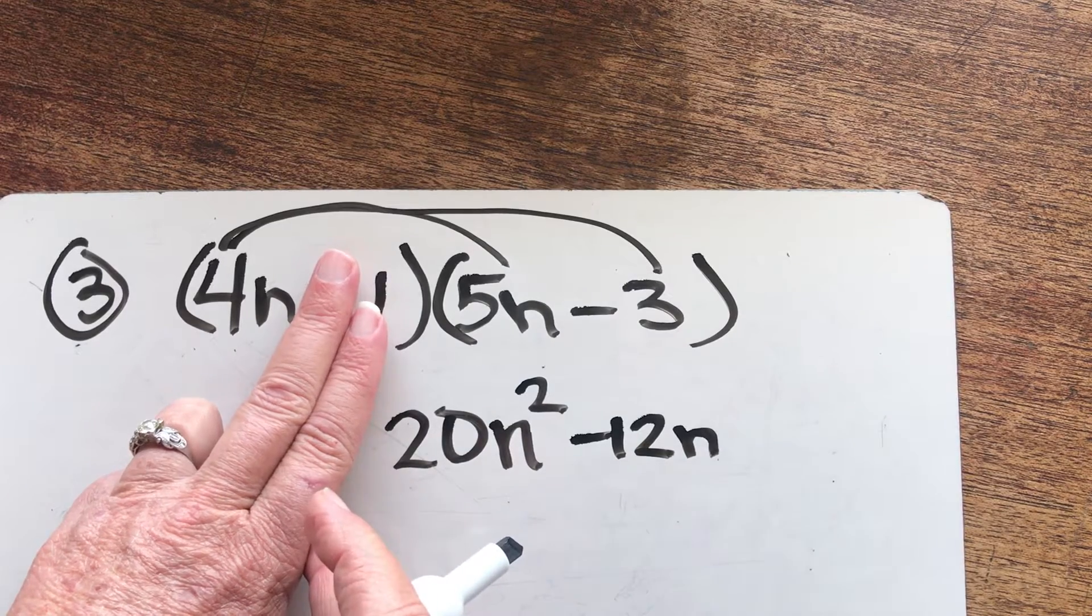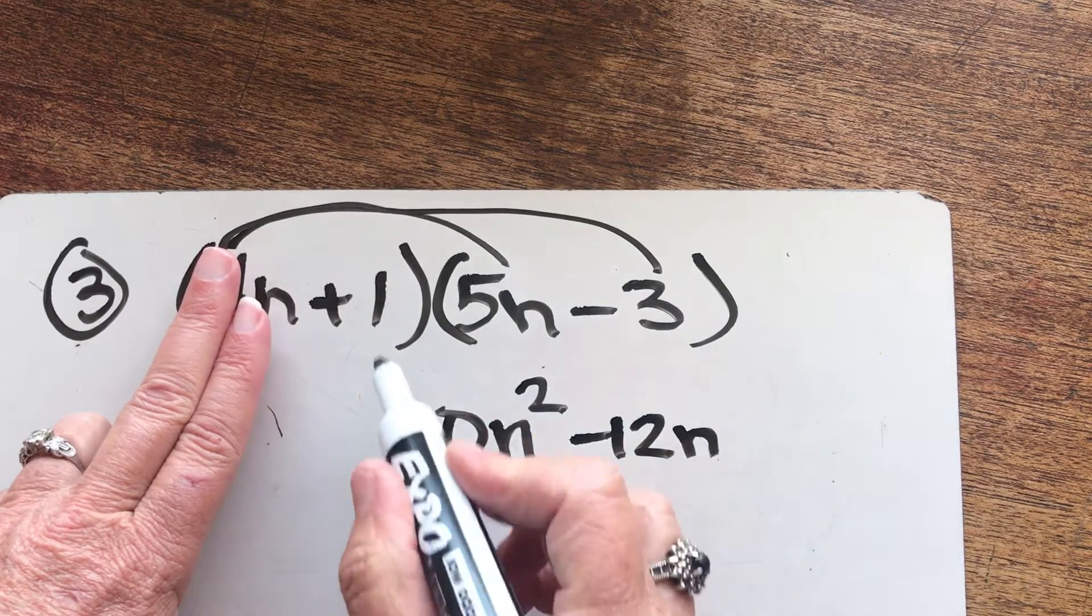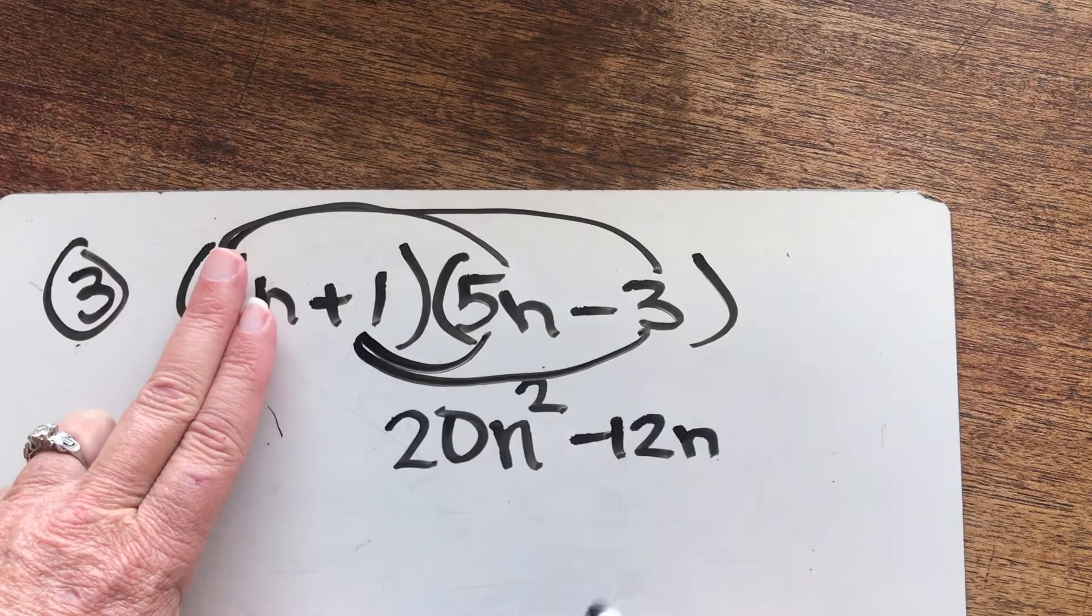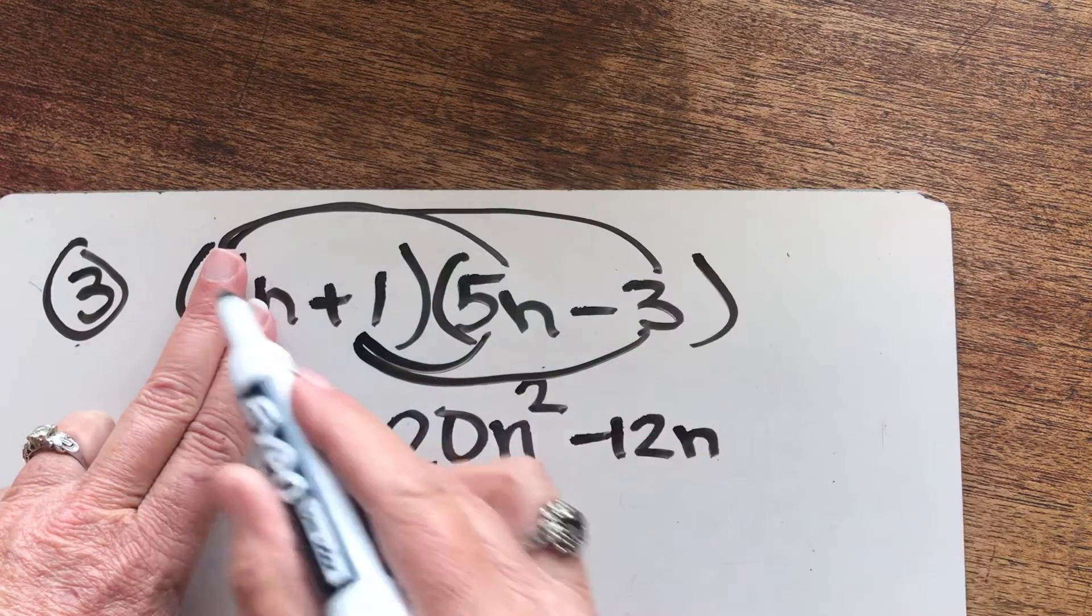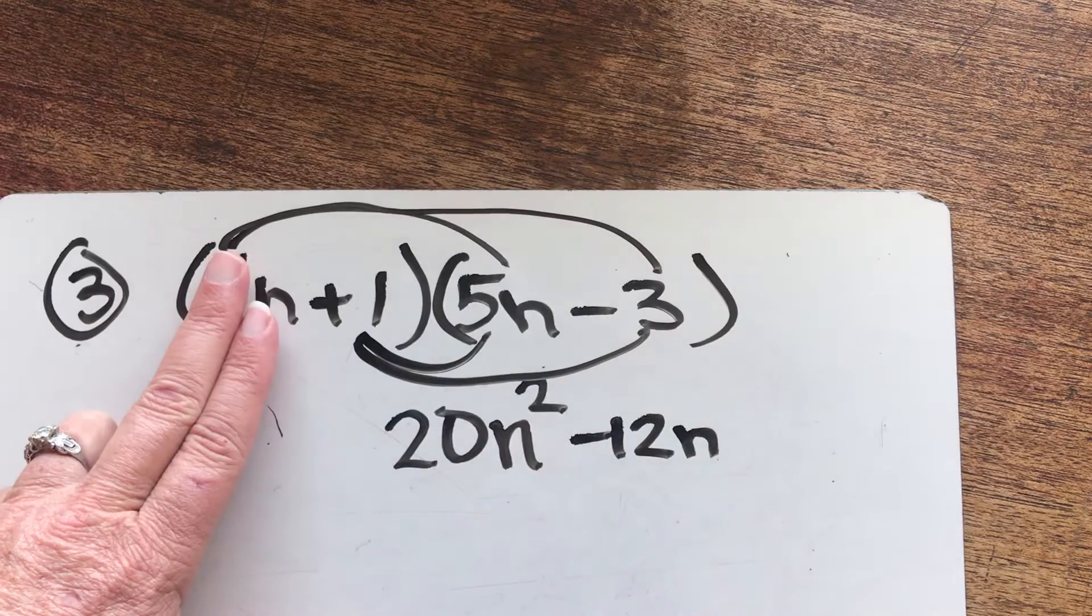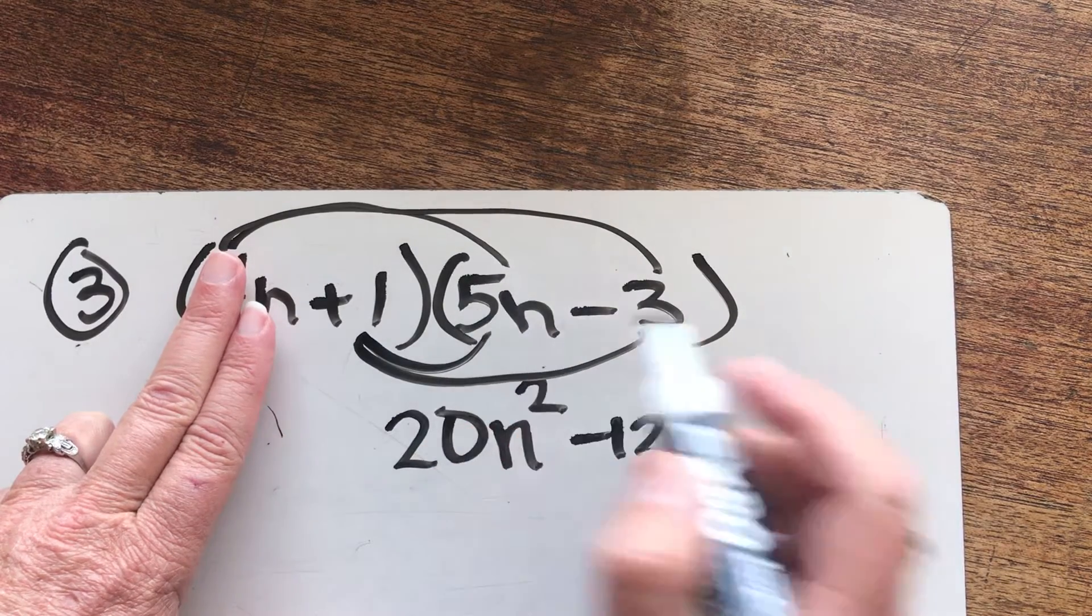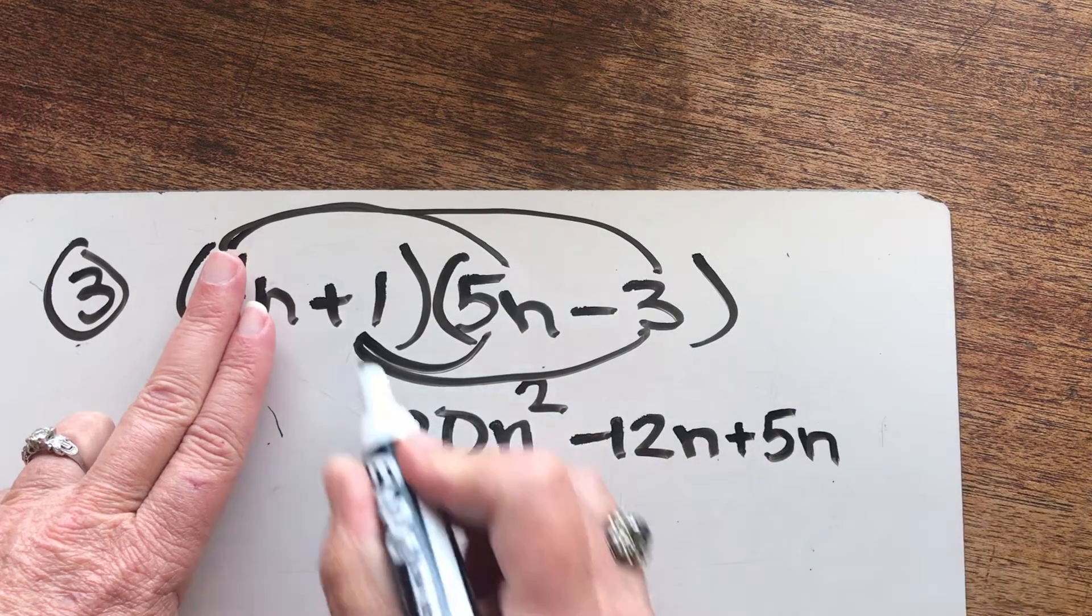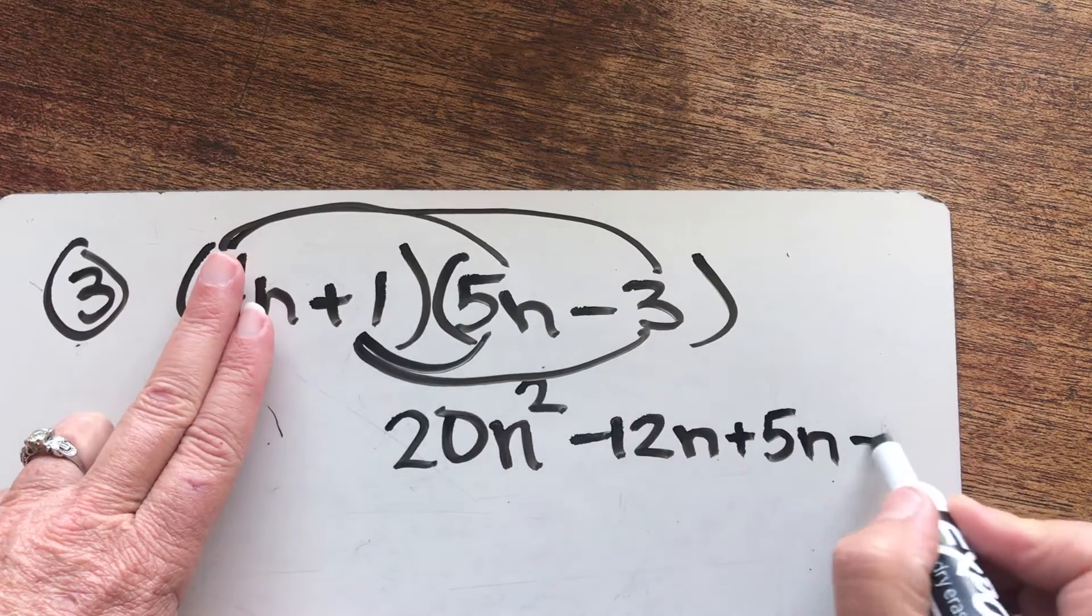Now I'm going to move my hand, and I'm going to distribute here. Almost looks like a crashing wave. I used to call this the wave method. One times five is five. It's going to be five N. And one times negative three is negative three.